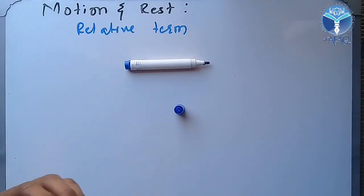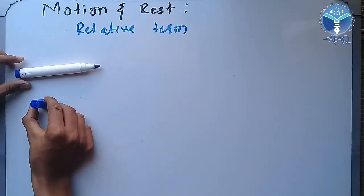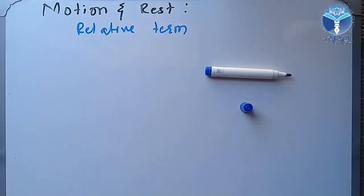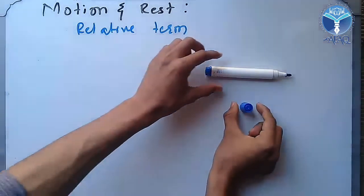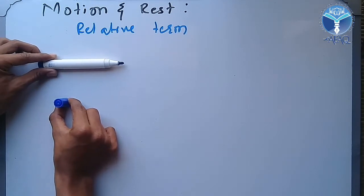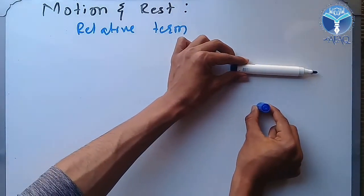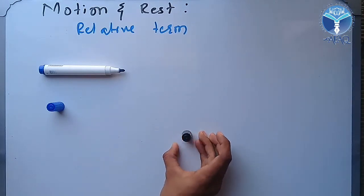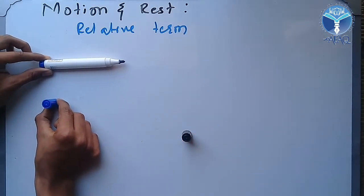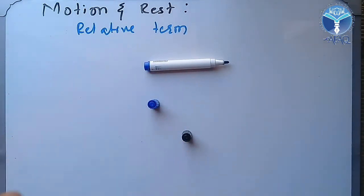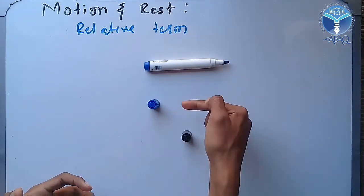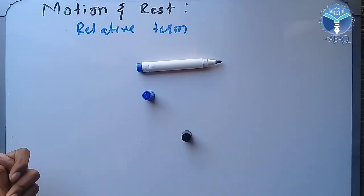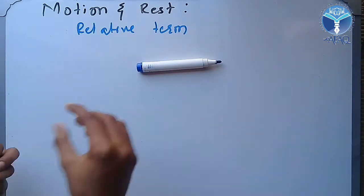Motion and rest — we have a terminology. If two bodies are moving with two uniform velocities and there is no position change relative to each other, we say they are in rest with respect to each other. But if another person observes them, they are in motion. So motion and rest are relative terms.